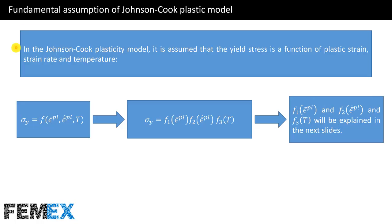Now I want to talk about the fundamental assumptions of the Johnson Cook Plasticity Model. In the Johnson Cook Plasticity Model, it is assumed that the yield stress is a function of plastic strain, plastic strain rate, and temperature.